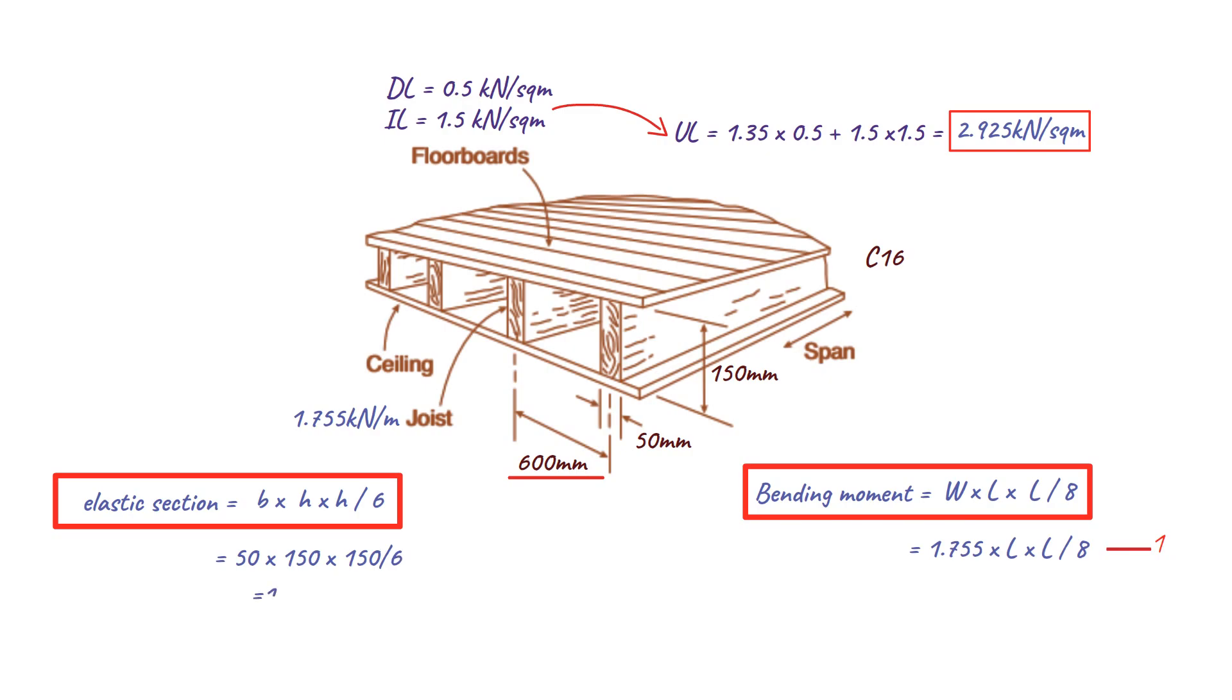The design bending stress is determined by considering strength modification factors and partial safety factors for material strength. For the purpose of this example, we will use class 1 medium term to refer to the load applied to the inside of the structure. This results in a design bending stress of 0.8 times the strength grade of 16, divided by the partial safety factor for material strength, which is 1.3 for timber. This results in a design bending moment of 9.85 newtons per square millimeter.